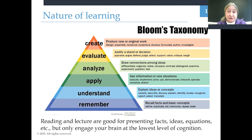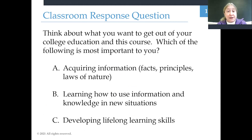Reading about physics and listening to a lecture are good for that lowest level of cognition — being able to recall facts and concepts — but they're only engaging your brain at that very low level. In order to engage your brain at these higher levels, we do other things in this class besides lecture. Acquiring information is certainly important, but learning how to use new information in new situations requires that you interact with other people, talk, explain things, ask questions, and discuss and defend your ideas.